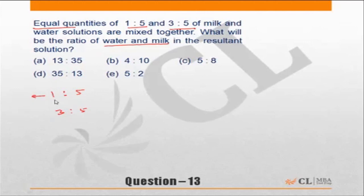That means out of every 6 liters in this one, 1 liter will be milk and 5 liters will be water. Similarly out here, out of 8 liters. But the question is about equal quantities, so 1 plus 5 adds up to 6, 3 plus 5 adds up to 8.